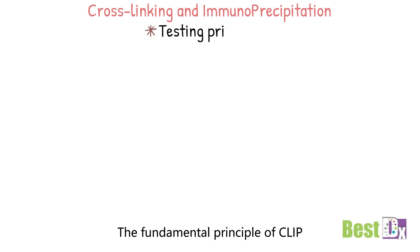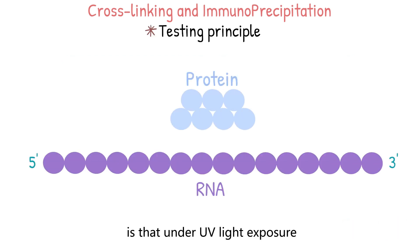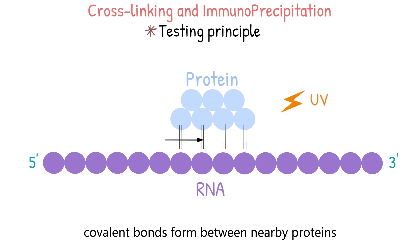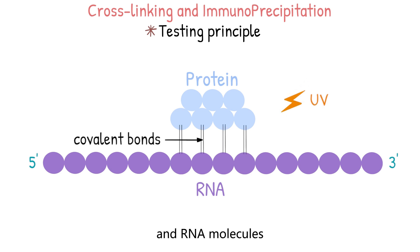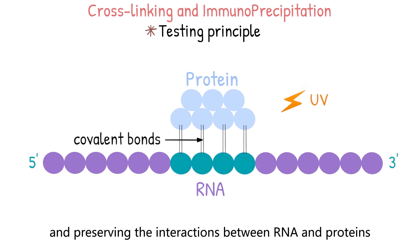The fundamental principle of CLIP is that under UV light exposure, covalent bonds form between nearby proteins and RNA molecules, occurring only at points of direct contact, and preserving the interactions between RNA and proteins.